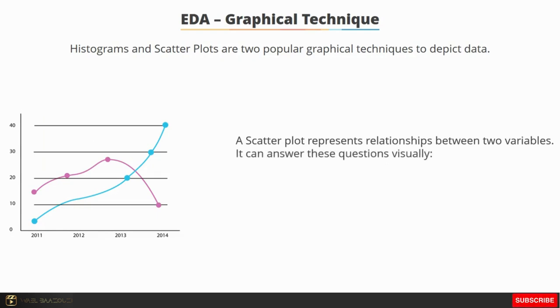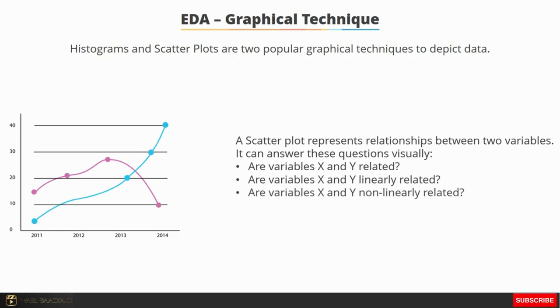A scatterplot can answer these questions visually: Are variables x and y related? Are variables x and y linearly related? Are variables x and y non-linearly related? Does change in variation of y depend on x? Are there outliers?